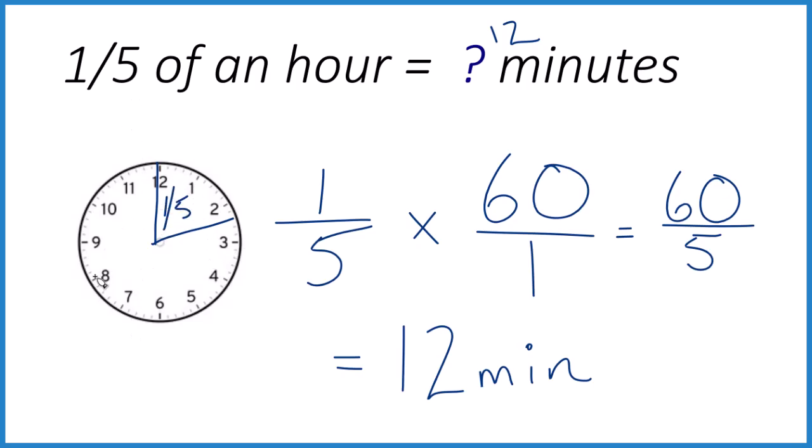And we could divide this up into five sections. Each section would be 12 minutes. And you add them up, you'll get 60 minutes. That's our hour. So one-fifth of an hour is 12 minutes. That's Dr. B. Thanks for watching.